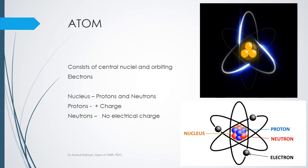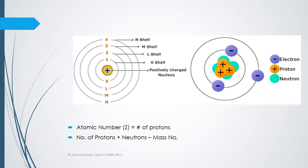Electrons revolve around the nucleus in orbits or shells, defined by alphabets: the K shell, L shell, M shell, and N shell. Each shell has a capacity to hold a certain number of electrons. Understanding this basic atomic structure is essential because the two major types of radiation — characteristic radiation and Bremsstrahlung radiation — are focused on the arrangement and structure of an atom.